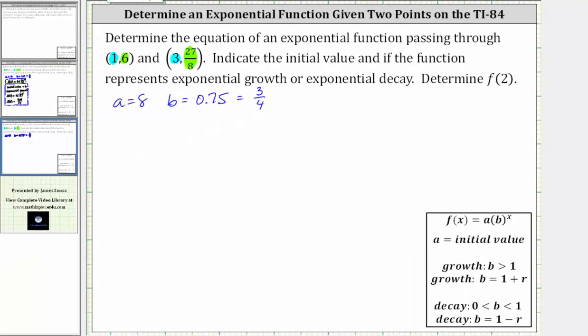So now we know the exponential function is f(x) equals a, which is eight, times b raised to the power of x, which is 3/4 raised to the power of x. A is the initial value, and therefore the initial value is eight.